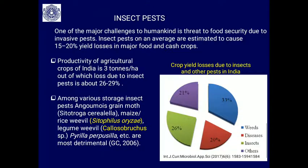Insect pests are one of the major challenges to humankind and a threat to food security. Innovative pest insects and insect pests on average are estimated to cause 15 to 20 percent yield losses in major food and cash crops.